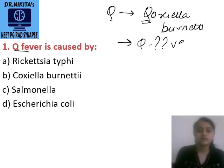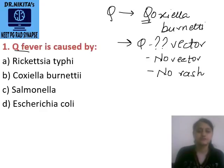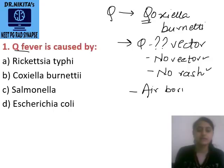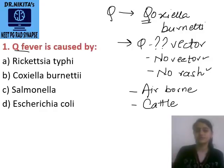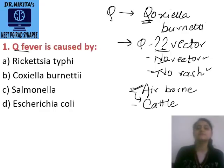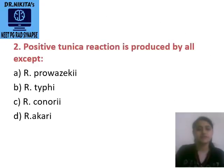Q means query or question mark — we do not know the vector for Q fever, meaning there is no vector. Similarly, there is no rash in Q fever. Q fever is an airborne disease. The mammalian reservoir is cattle. When human beings inhale air containing Rickettsia from cattle — from placental material, urine, or faeces — that is how we get Q fever. So Q fever is caused by Coxella burnetii.